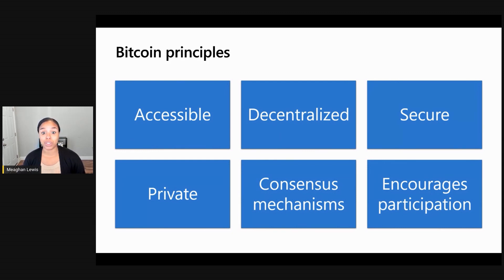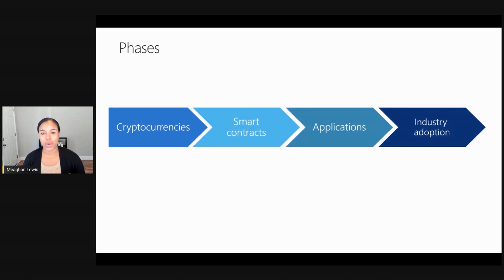Bitcoin is built off of blockchain technology, but it was just the first major use case that emerged. We'll get into more blockchain history in a later video. But for now, let's talk a bit about how blockchain has evolved, examining different phases. Blockchain 1.0 is all about cryptocurrency. This includes cryptocurrency blockchains like Bitcoin and Ethereum, which are the most popular options.